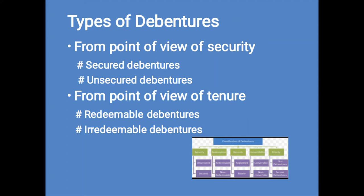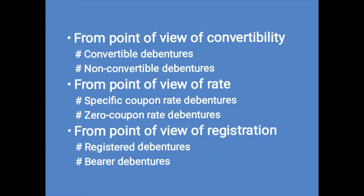The last classification is from the point of view of registration: registered debentures and bearer debentures. Registered debentures are those within which all the details comprising addresses, names, and particulars of the holding of the debenture holders are filled in a register kept by the enterprise. Such debentures can be moved only by performing a normal transfer deed. Bearer debentures can be transferred by way of delivery and the company does not keep any record of the debenture holders. Interest on the debentures is paid to the person who produces the interest coupon attached to such debentures.